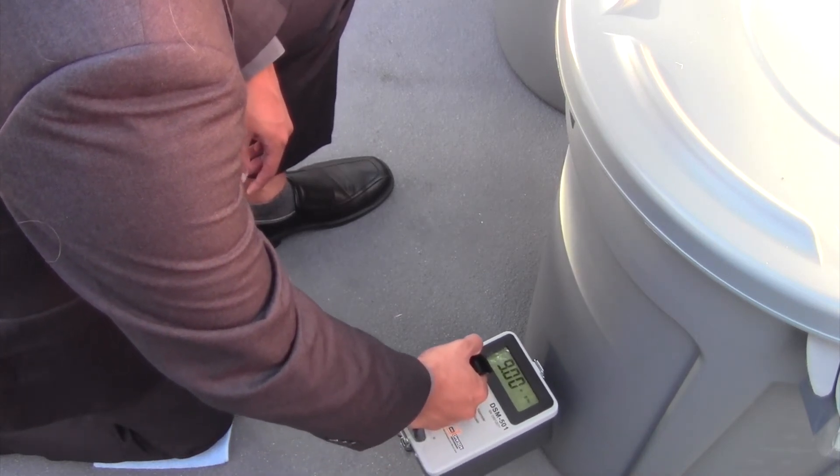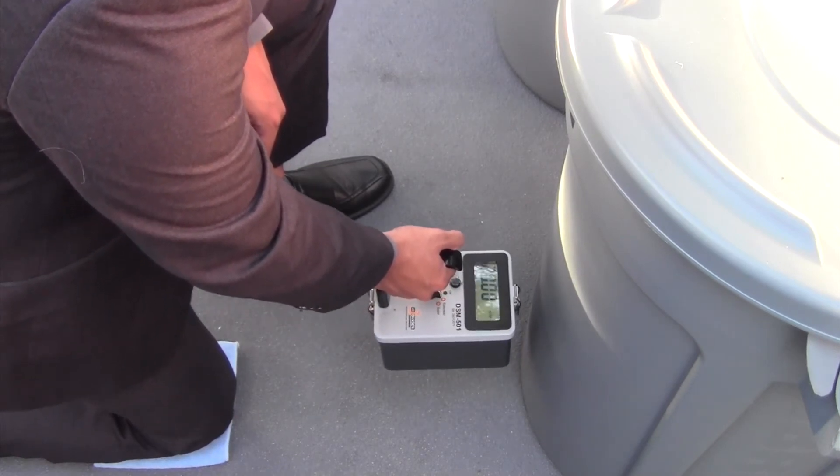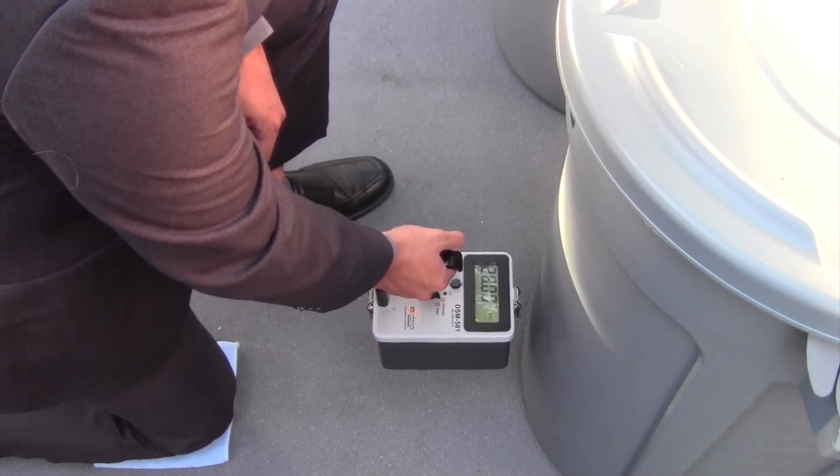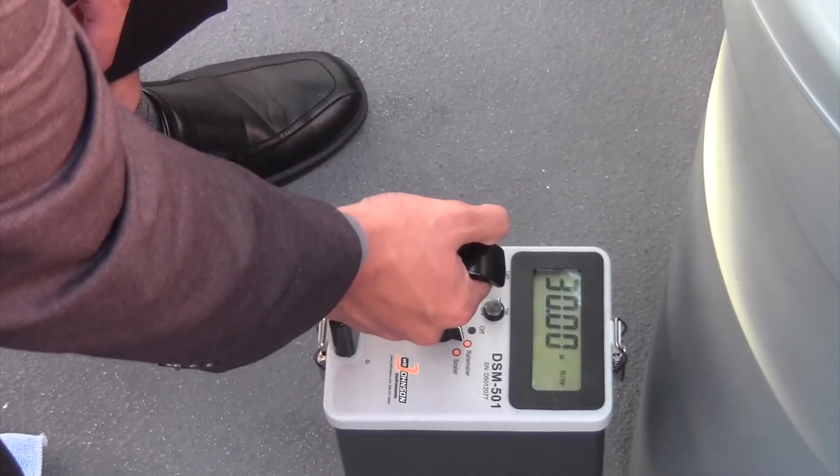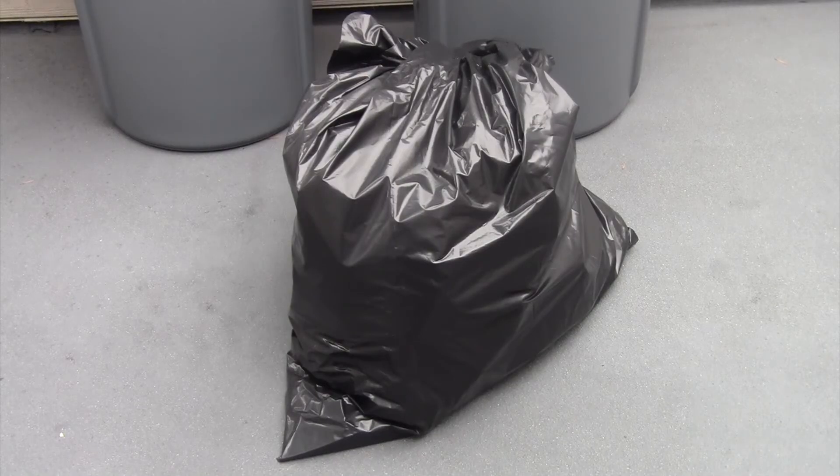If the dose rate spikes while surveying, pause for five to ten seconds over the area to provide adequate time for instrument response. After detecting a spike in radiation emission, further investigate to locate the source, which was a one microcurie cesium-137 source.